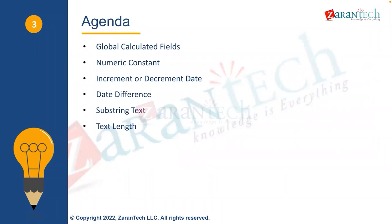This is the agenda for the day. We've looked at the two types of calculated fields — global and report-specific. Global ones are available tenant-wide, not specific to a report, while report-specific ones can only be used as part of the report they are defined in. The second topic will be numeric constants — there will be requirements to create constant values as part of your reporting needs.